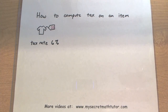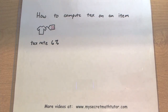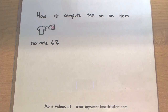Welcome to My Secret Math Tutor. I'm going to show you how you can compute the tax on an item. In my next example, suppose that I have a shirt that costs $23, and the local tax rate is 6%. I want to figure out how much I'm going to pay in tax, and then figure out what my final price is going to be, including tax.